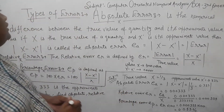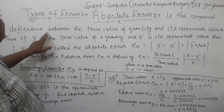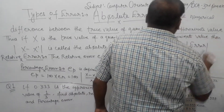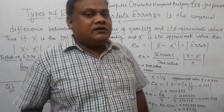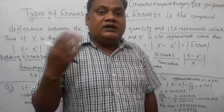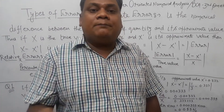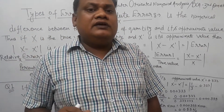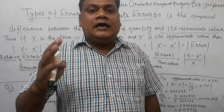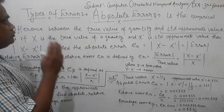So first let's determine the types of errors. Absolute Error is the numerical difference between the true value of a quantity and its approximate value. The formula is: Error equals True Value minus Approximate Value. This is the Absolute Error, denoted as E_A.